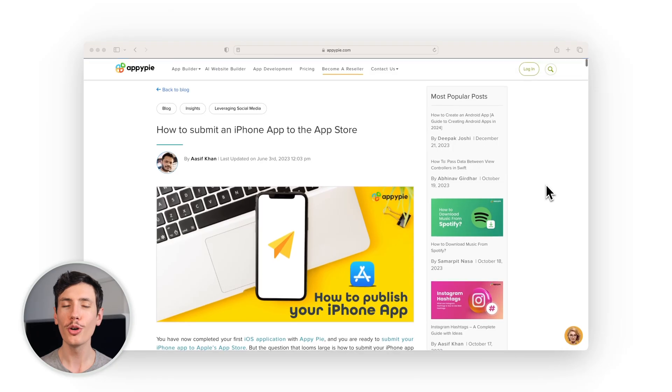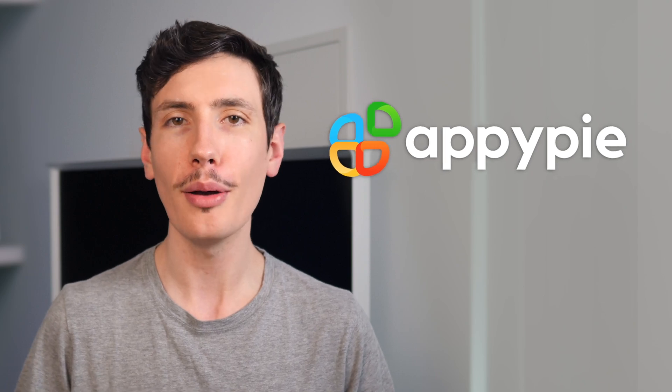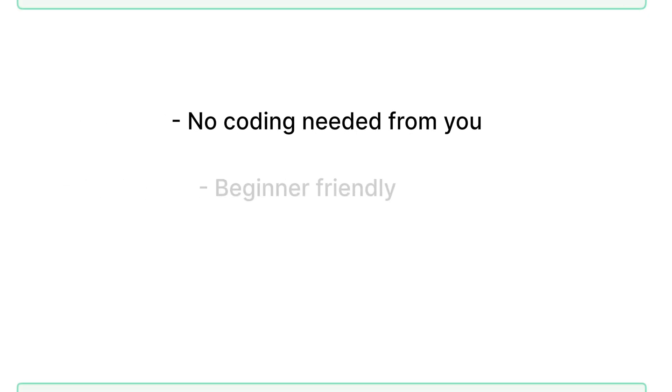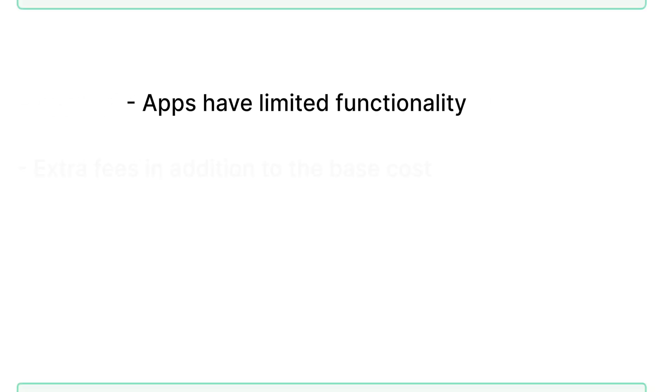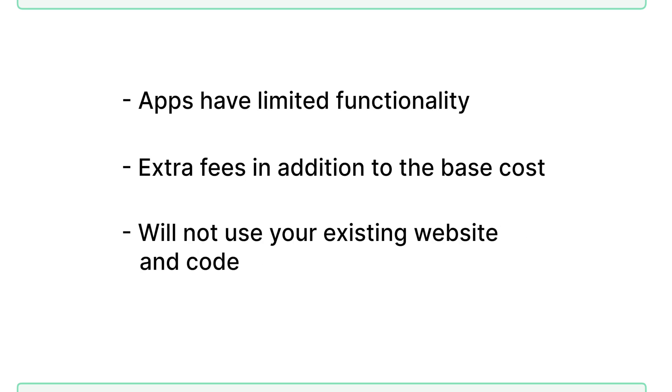After you finish making your app, you can publish it, but this is not the same thing as getting it approved on the iOS and Android app stores. To do so, you need to follow another support guide that AppyPie sends you. The app you build will also not integrate well with your existing website and code. AppyPie is good if you don't know what kind of app you want and you don't already have a website. It could work for building prototypes and test apps, but if you want more than a basic app with limited functionality, AppyPie might not be the best choice. Pros: no coding needed, beginner friendly, and handy templates. Cons: apps have limited functionality, there are a lot of extra fees, and it will not reuse your existing website and code.